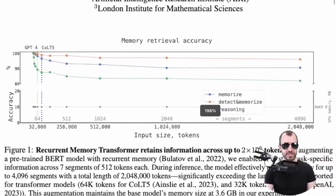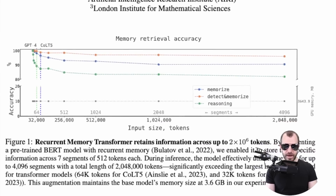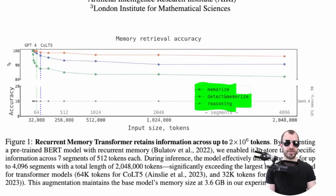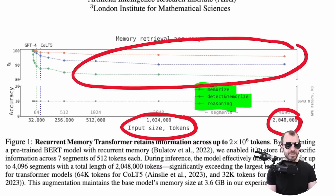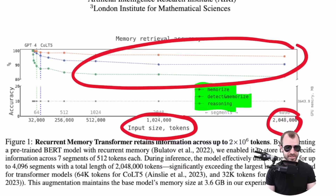In the first page plot right here, they have some tasks that they want the transformer to do. For example, there's a memorize task, there is a detect and memorize task, and there is even a reasoning task. We have input size in tokens, and they go up to 2 million. You can pretty much see that the transformer holds up performing these tasks across all of those token sizes.